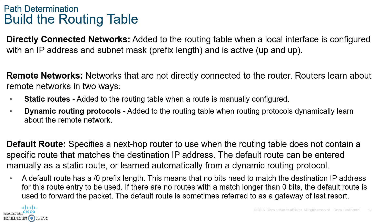The routing table has two main entry types: directly connected networks (marked with 'C') and remote networks — networks not directly connected to the router. A router learns about remote networks in two ways: static routes, which are manually configured, or dynamic routing protocols such as OSPF, EIGRP, or RIP, which communicate with each other and update their routing tables automatically.